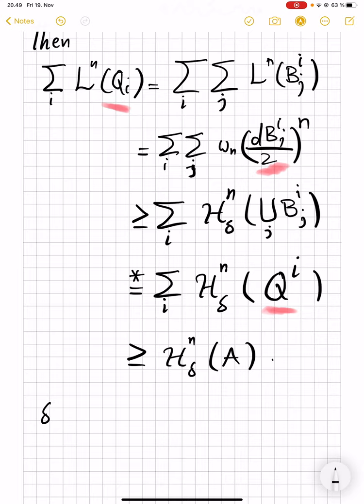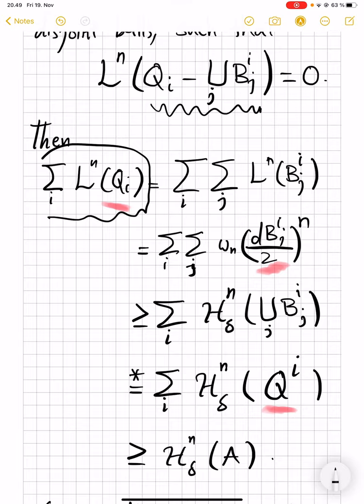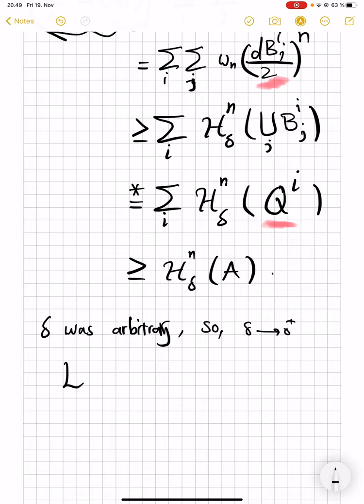And that is it, because delta was arbitrary. So let delta go to zero. And you end up, remember this is also bounded by L^n plus epsilon. So what you ended up proving is that L^n of A plus epsilon is bigger than or equal to H^n of A.